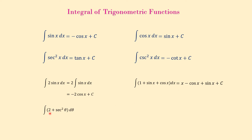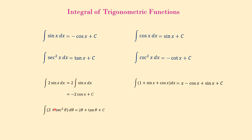Another example: what is the integral of (2 + secant squared of theta) d-theta? Here the variable is theta, not x. The integral equals 2-theta plus tangent of theta plus C. The integral of 2 with respect to theta is 2-theta, and the integral of secant squared of theta is tangent of theta plus C.